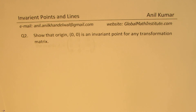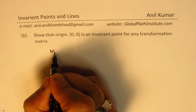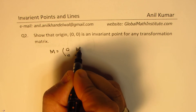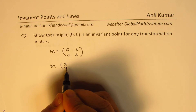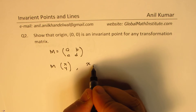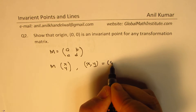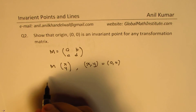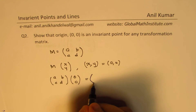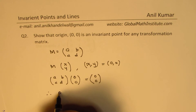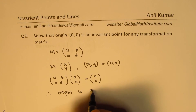Question 2: show that origin (0, 0) is an invariant point for any transformation matrix. Let's take a transformation matrix as [A, B; C, D]. If I apply this transformation to the point (0, 0), we get [A, B; C, D] applied to (0, 0), which results in (0, 0). Therefore, origin is an invariant point for any transformation matrix.